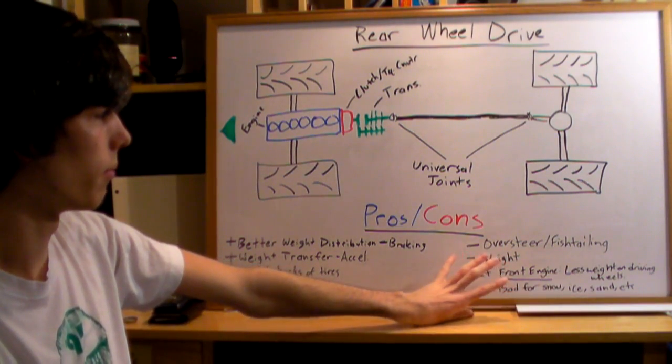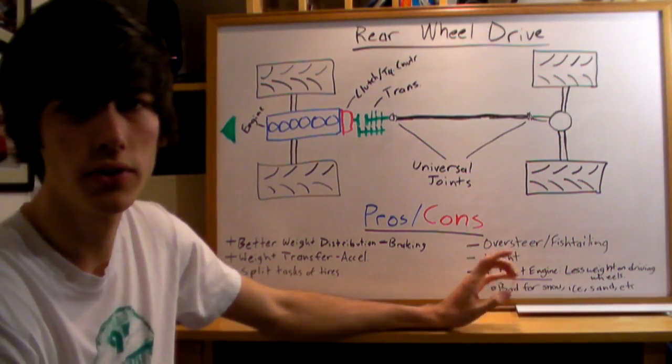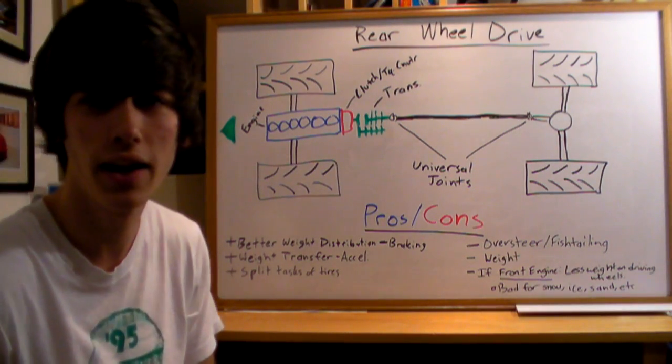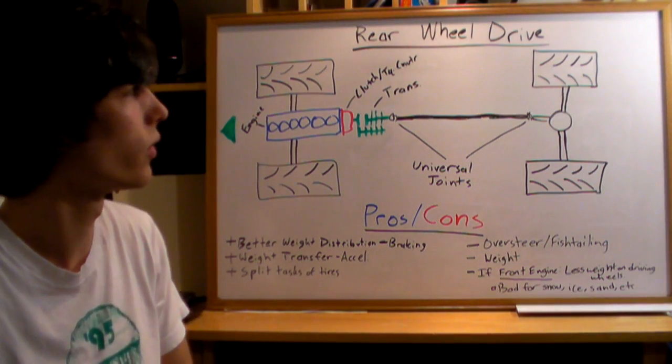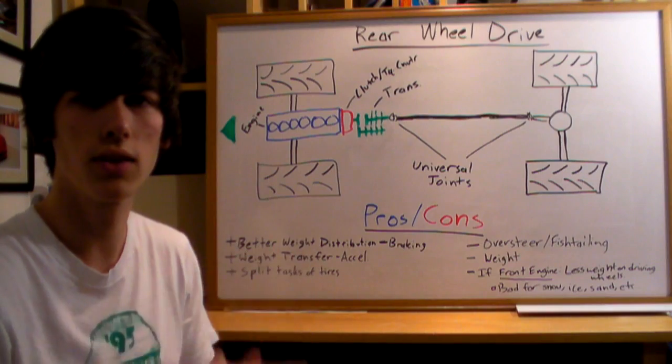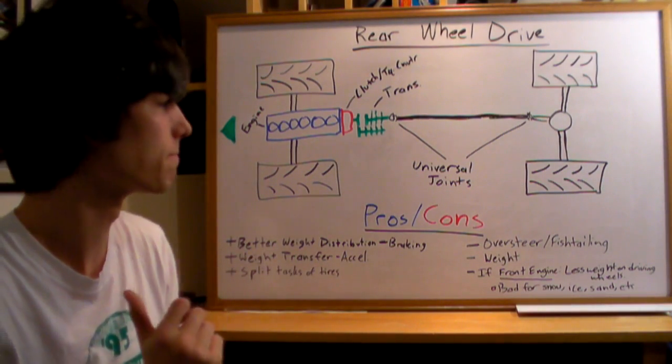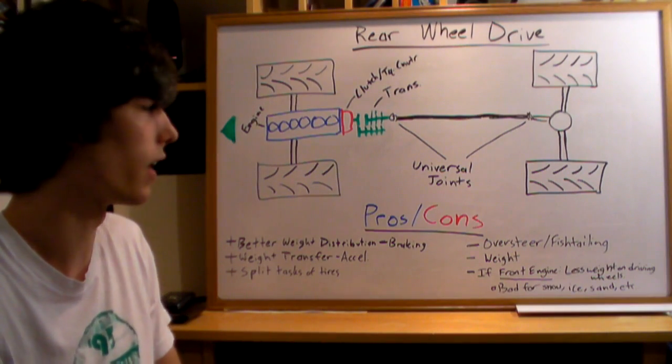Some disadvantages are oversteer and fishtailing. You've probably experienced this if you have a rear wheel drive car. If you give it too much gas in a corner, the back's going to slide out and you'll have to correct for that. That's one disadvantage that might not be the safest thing.